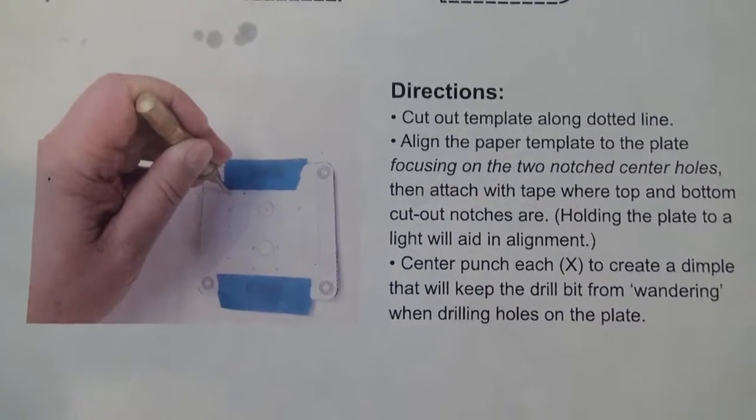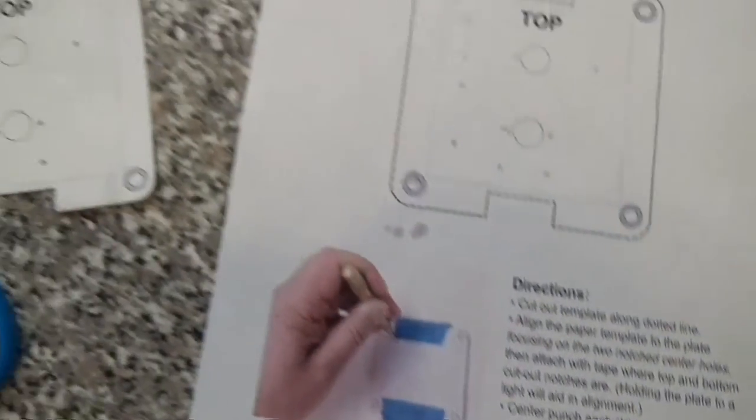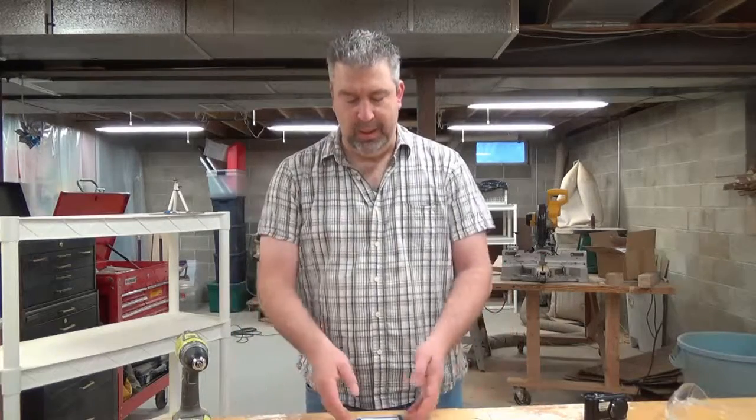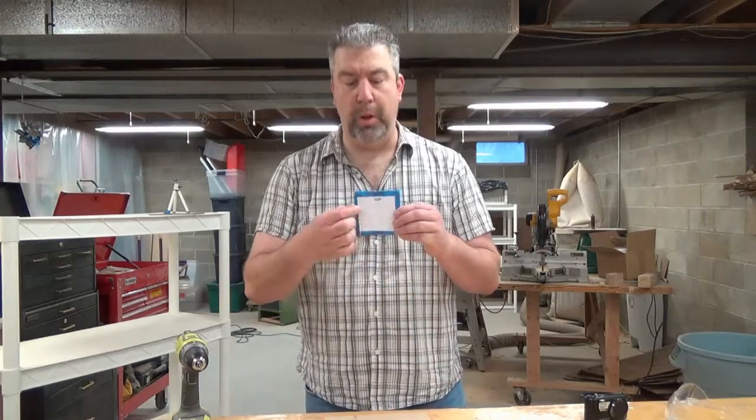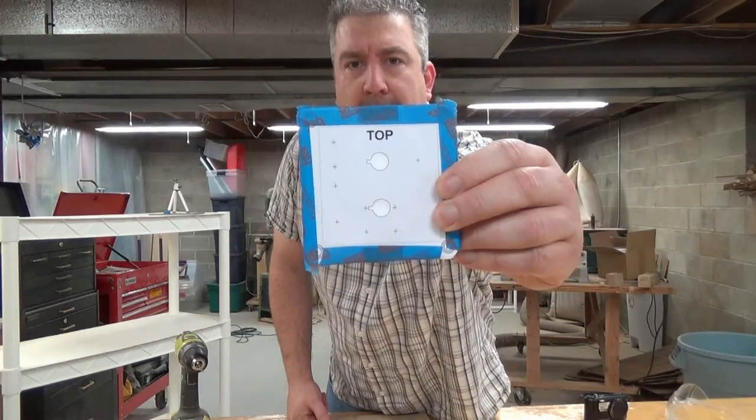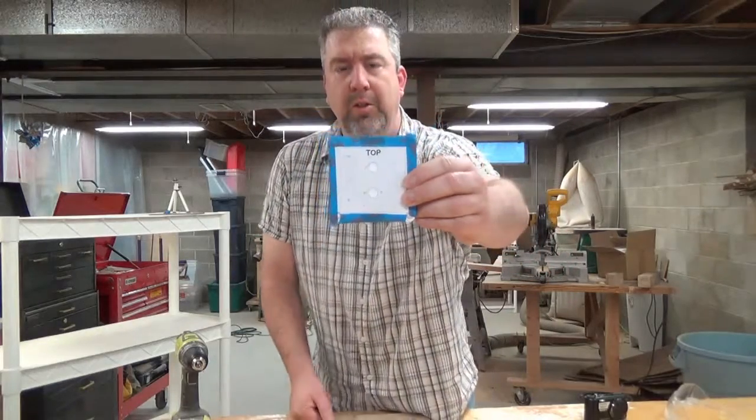You can put some blue tape around it and fasten the template to your binding post plate. From there you can mark out the holes. The next step is to punch out where all of the X's are. The template has little X's.